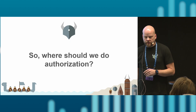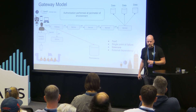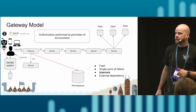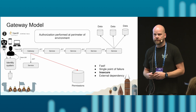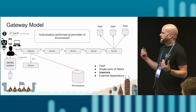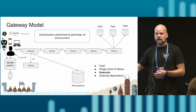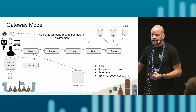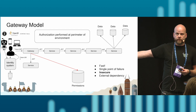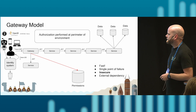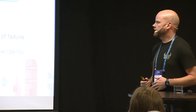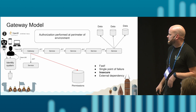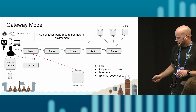A simple model — prevalent for a long time — is the centralized gateway model. It basically says this is hard, let's just do it once and be done with it. We put a gateway component in front, authorize the user, and once they're authorized, it's an open highway. Problems: if you made it past the gateway, there's no further authorization. Services behind the gateway talking to each other also require no authorization. It is fast, but it's a single point of failure, not very secure, and it is an external dependency.